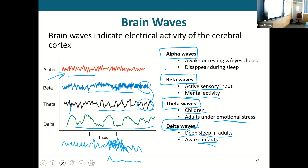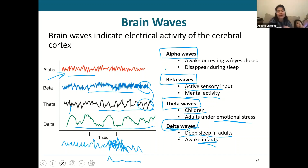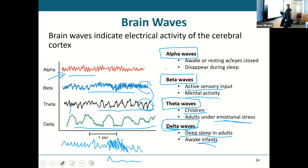For theta waves, children don't have to be under emotional stress — that's just normal in children. So theta waves for children is the normal, and delta waves for infants is the normal.